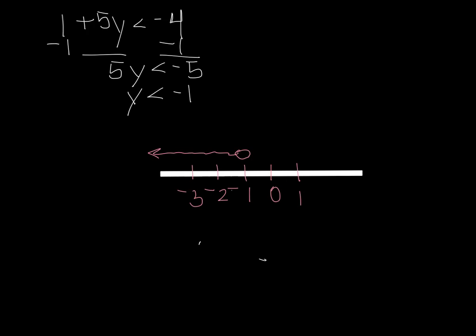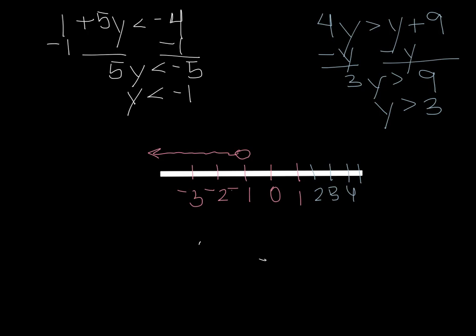Fantastic. Now let's do the other inequality, which is 4y is greater than y plus 9. So again, I want to solve for y, so I'll subtract y from both sides. So now I have 3y is greater than 9. So I divide by a positive 3. So y is greater than 3. Well, it looks like I need a few more numbers on this number line. So here's 2, 3, 4. And so it's y is greater than 3. So I do an open circle, and I shade in all of the numbers greater than 3.